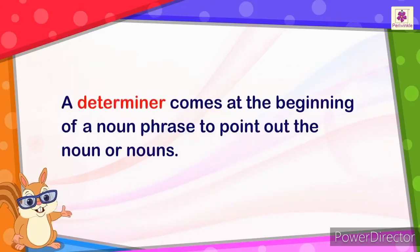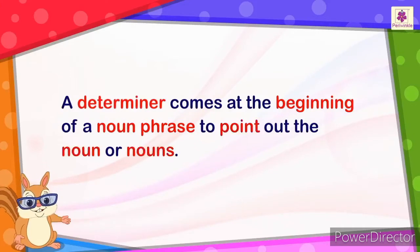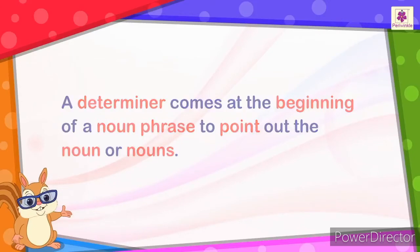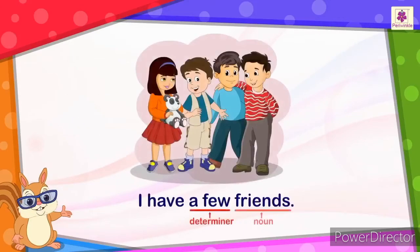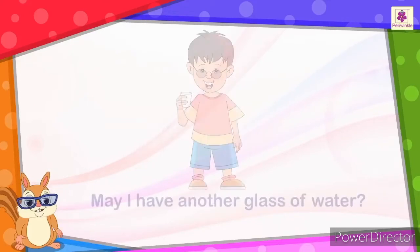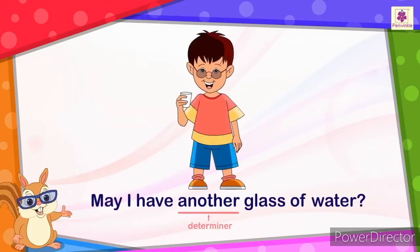A determiner comes at the beginning of a noun phrase to point out the noun or nouns. For example: 'I have a few friends.' 'May I have another glass of water?'